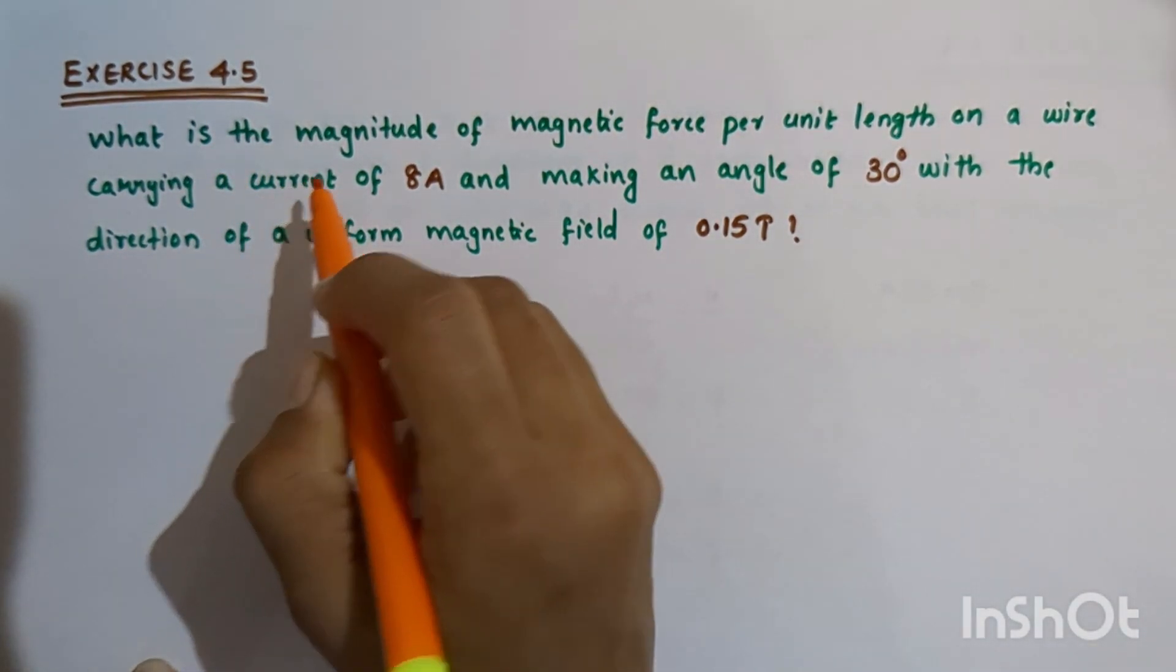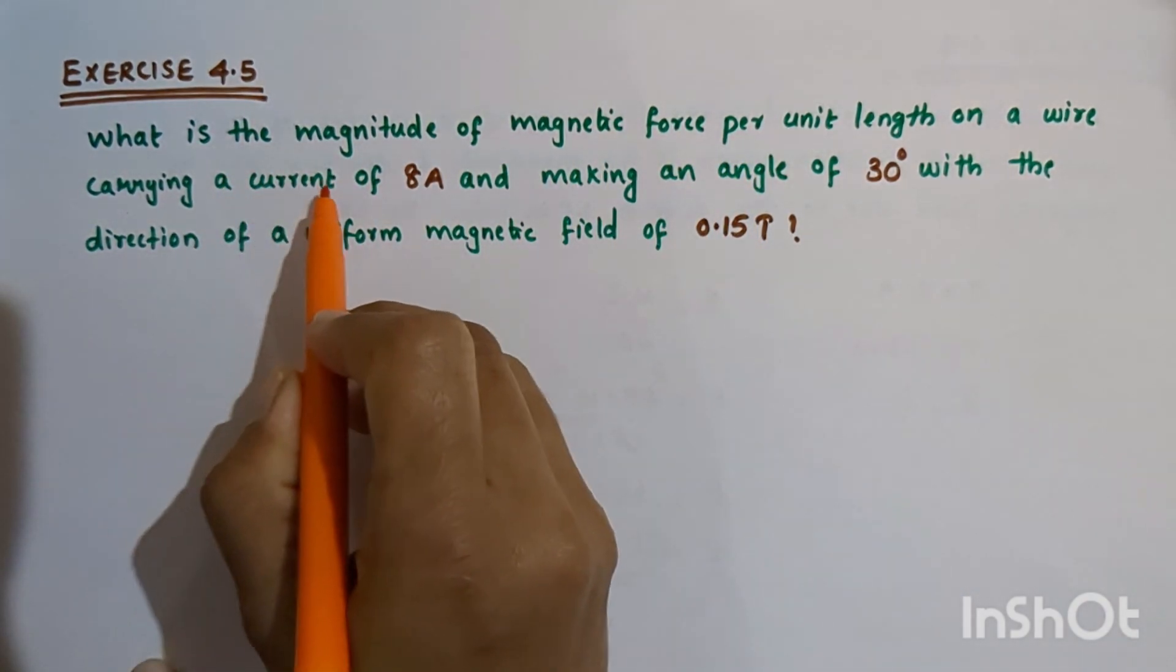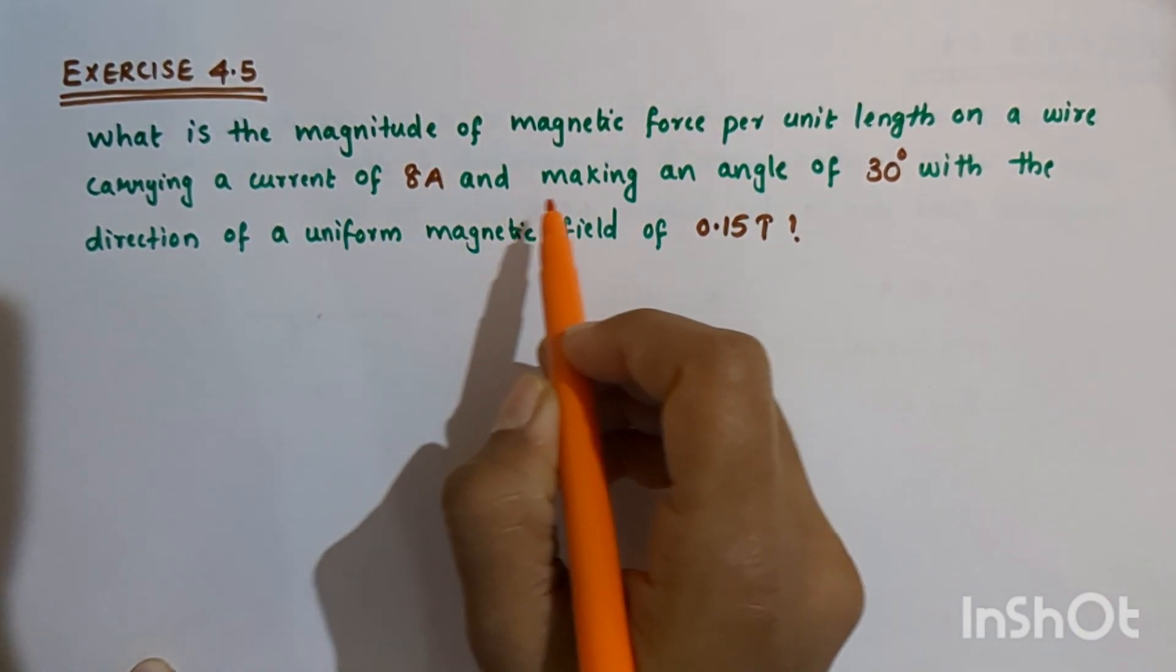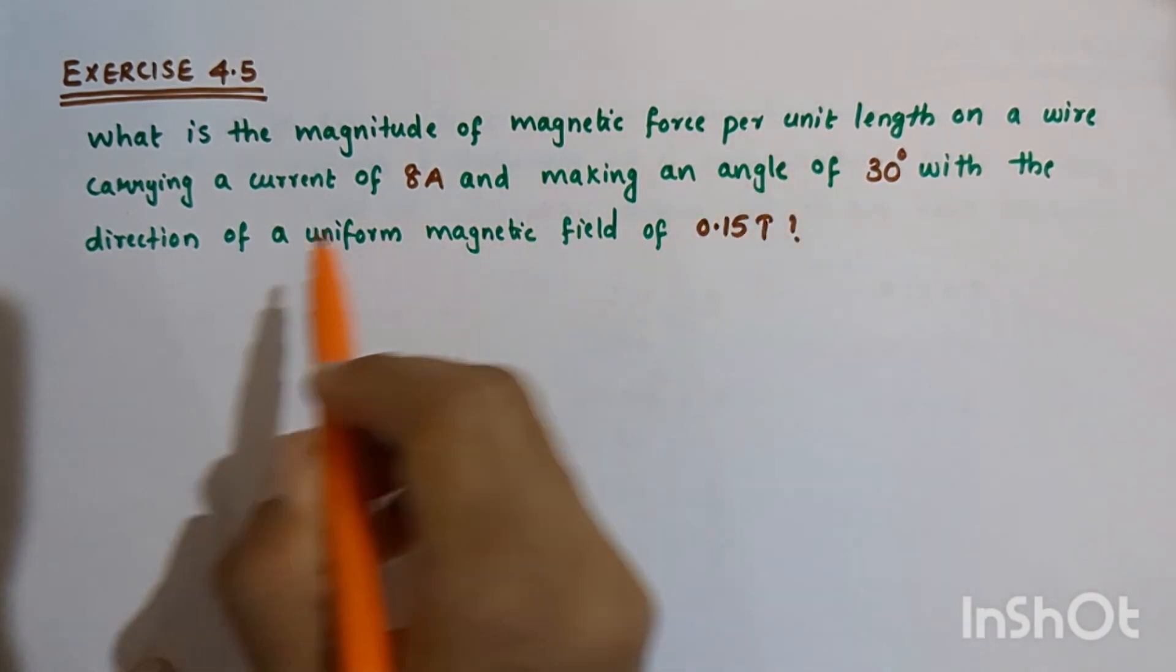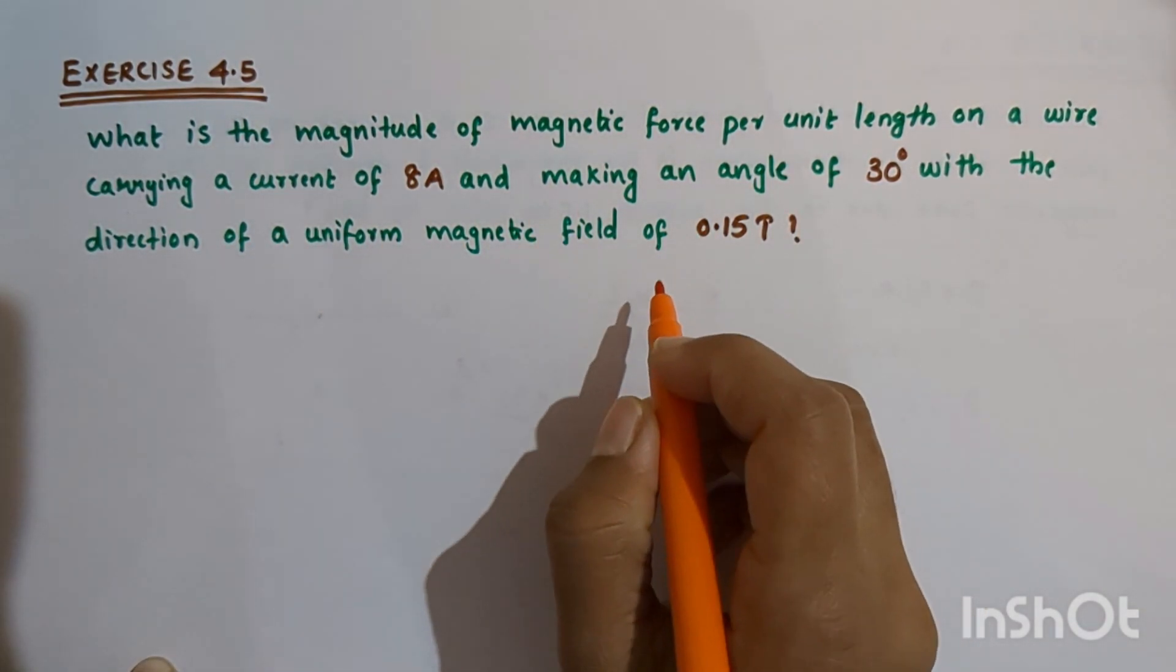The question is: What is the magnitude of magnetic force per unit length on a wire carrying a current of 8 ampere and making an angle of 30 degrees with the direction of a uniform magnetic field of 0.15 tesla?